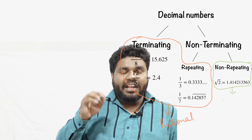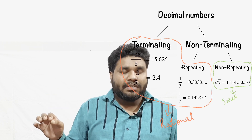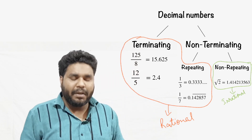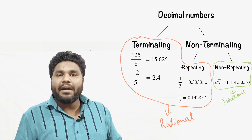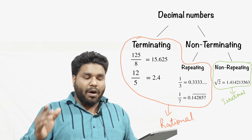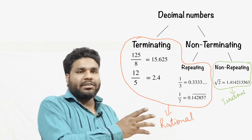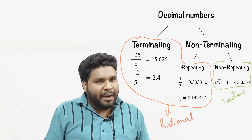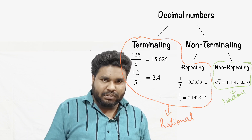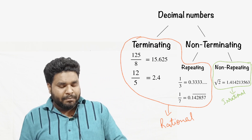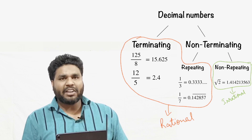Terminating and repeating decimals are part of rational numbers, and irrational numbers are only the non-repeating type. The definition of irrational numbers is: numbers which are non-terminating and non-repeating are called irrational numbers. The rest — numbers in the form of p/q, fractions, terminating, and repeating decimals — are all rational numbers.